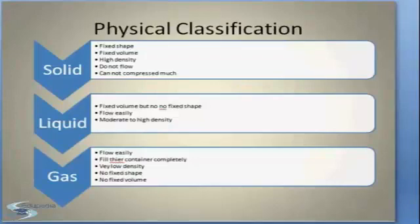Now let's conclude these things. We have seen ice as a solid having a fixed shape, fixed volume, high density. They don't flow and they cannot be compressed much. Solids are also rigid form of matter. Now let's see water as a liquid. They have a fixed volume but no fixed shape. That is, if you pour a glass of water, water will take a shape of a glass. If you change into another container, it will take the shape of the container. That is, they don't have a fixed shape, but they flow easily. They do have a moderate to high density.